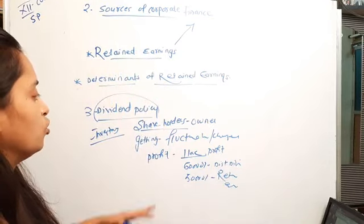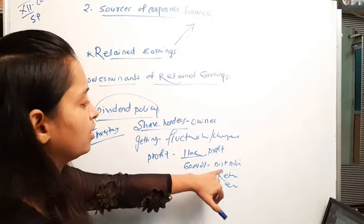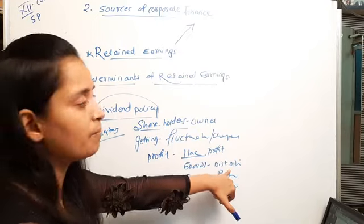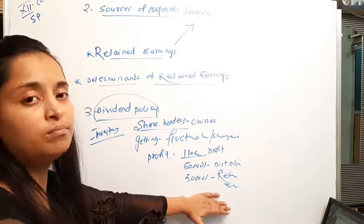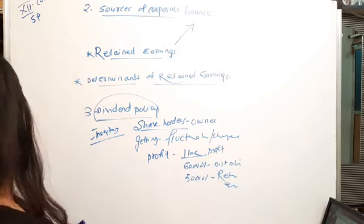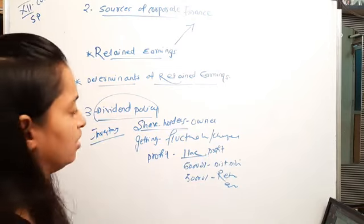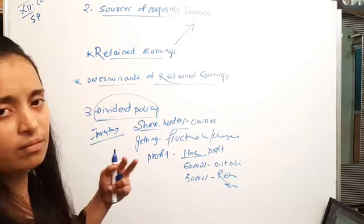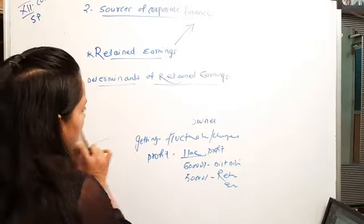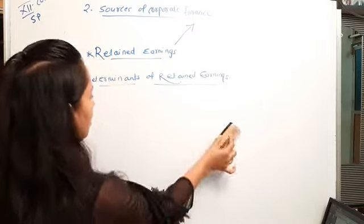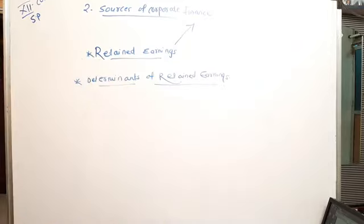If a company keeps a large portion as retained earnings and distributes less as dividends, investors will be affected. They may think the company does not give good returns, and next time they may not want to invest their money in the company.